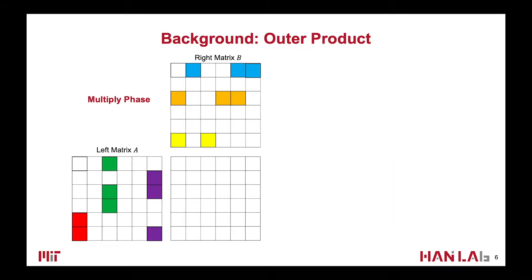One efficient implementation of sparse matrix multiplication is the outer-product-based method, because it can have perfect input matrix data reuse. This method contains two phases: multiply and merge. In the multiply phase, each column of the left matrix will be multiplied by the corresponding row in the right matrix, resulting in an intermediate partial matrix.